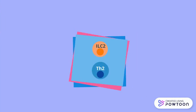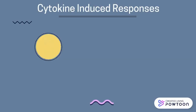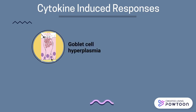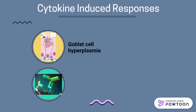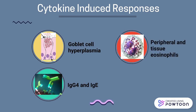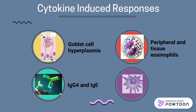These cells, once activated, will release the cytokines interleukin-4, interleukin-5, interleukin-9, and interleukin-13. The cytokines will induce goblet cell hyperplasia, high levels of antigen-specific IgG4 and IgE, high levels of peripheral and tissue eosinophils, which are disease-fighting white blood cells, and differentiation of M2 macrophages.